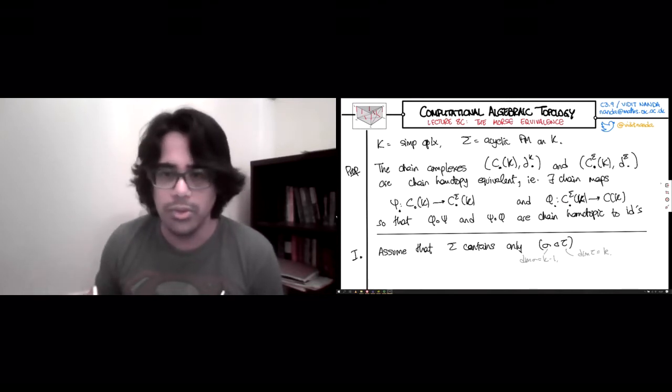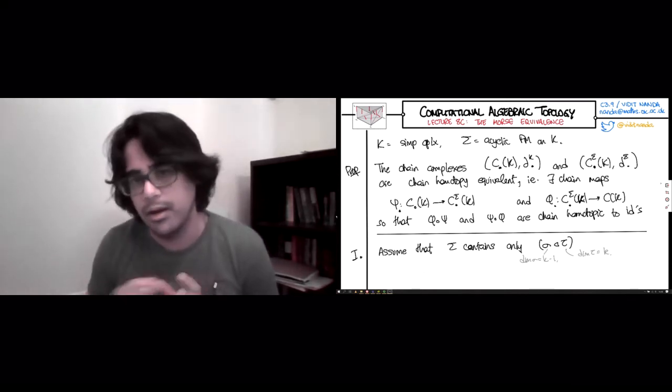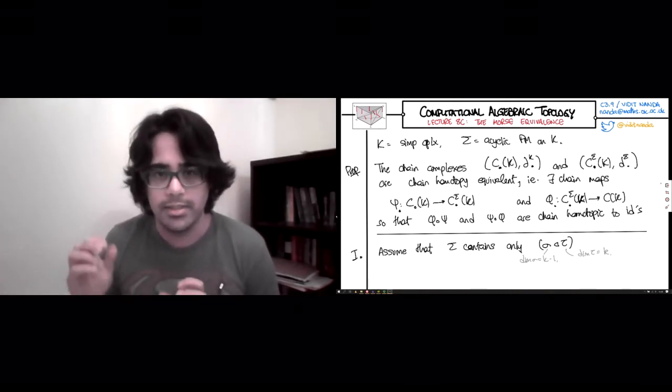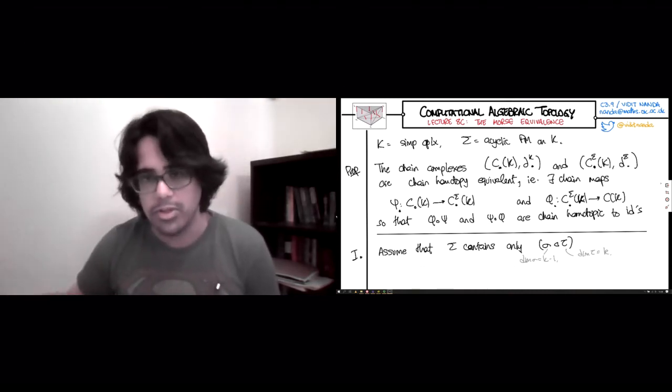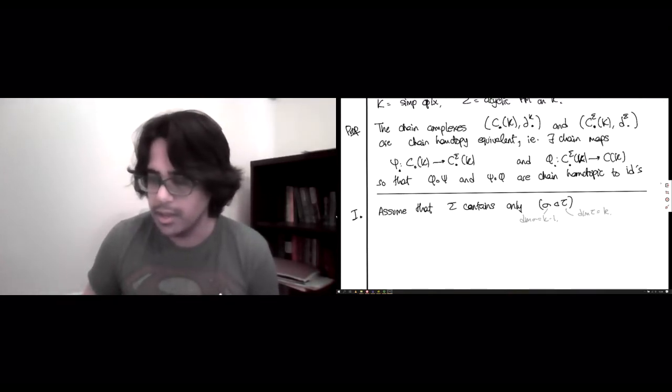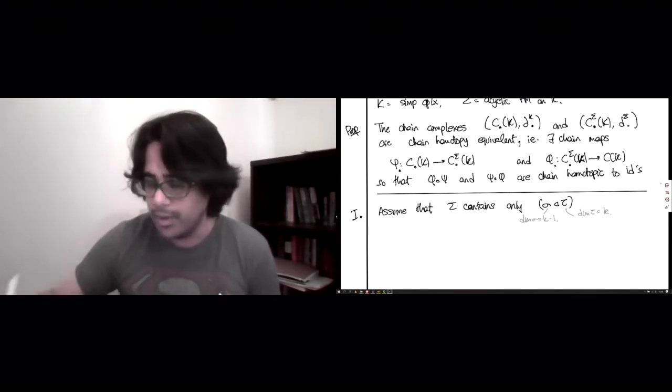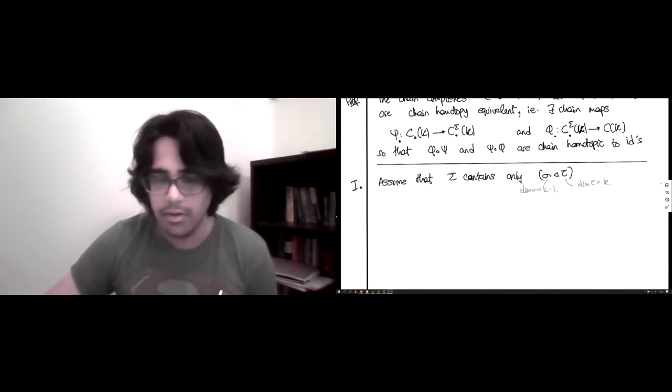And in the second step, we will do this, assuming sigma contains lots of pairs. We'll do this once for every pair and somehow link together these chain homotopy equivalences one pair at a time, from the big complex all the way down to the small Morse complex and then back. And so if you restrict to this very special case where sigma is a face of tau and that's the only pair that your acyclic partial matching has, then life becomes very, very straightforward.